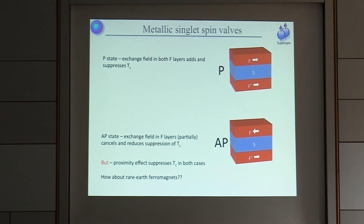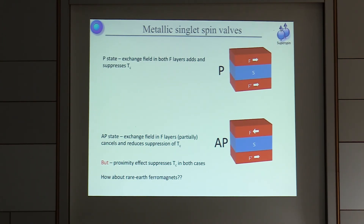All of the structures I'm going to talk about are metallic multilayers of one sort or another. The first historically to be investigated was what's now called a singlet spin valve or singlet spin switch. The simplest of these is two ferromagnetic layers with a superconductor layer in between, and depending on whether these layers are parallel or anti-parallel, you either generate an addition of the exchange fields or a partial cancellation.